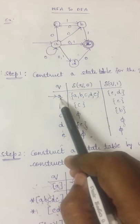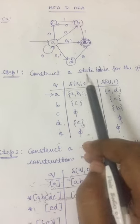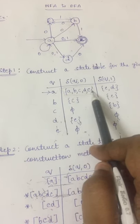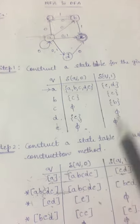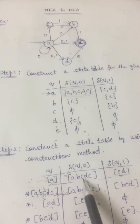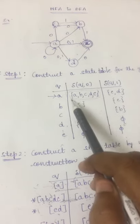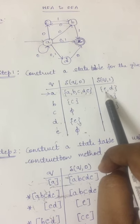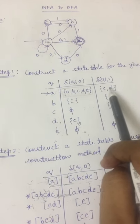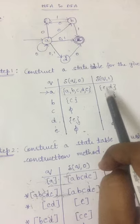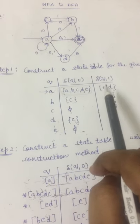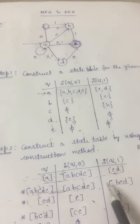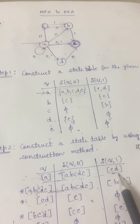For state A by reading input symbol 0, it is reaching A, B, C, D, E. This A, B, C, D, E has to be represented as a single state. Similarly, for state A by reading input symbol 1, it is reaching E and D. E and D are different states in step 1, but we have to represent them as a single state in step 2.